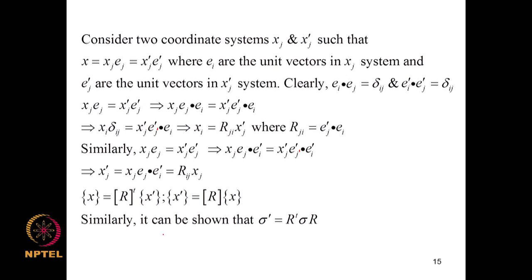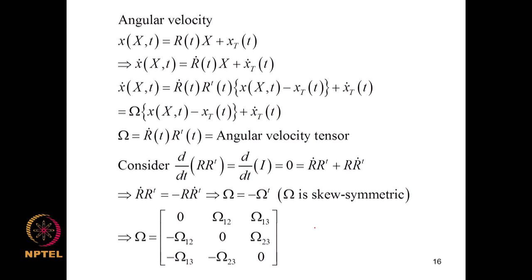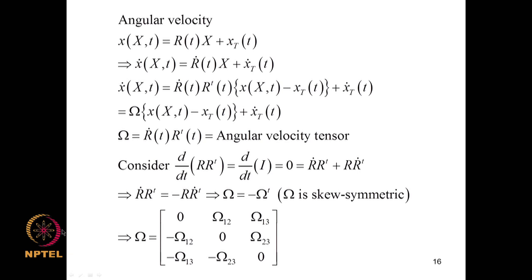We introduce the angular velocity tensor. For rigid body translation and rotation x = R(t)X + xT(t), differentiating with respect to time gives ẋ = Ṙx + ẋT. Substituting for X using the inverse relation and denoting Ṙ R^T as capital Ω, this quantity is known as the angular velocity tensor.